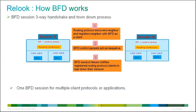When the routing protocol discovers a neighbor, it sends a request to the BFD process to register the routing protocol as a client. BFD control packets are used to establish the BFD neighborship session and negotiate BFD timers. After session establishment, BFD control packets act as keepalives. When the BFD session goes down, the BFD process rapidly notifies the registered routing protocol client, the routing protocol tears down its neighborship, and if an alternative path exists, routing protocol immediately converges.